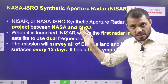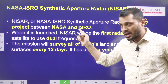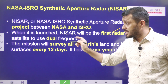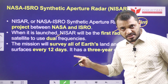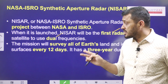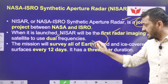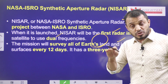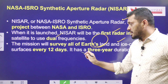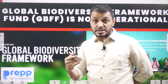NISAR is a combined satellite being developed by both NASA and ISRO. The name stands for NASA-ISRO Synthetic Aperture Radar. It is going to be the first radar imaging satellite to use dual frequencies, enabling more detailed Earth observation. Every 12 days, this satellite will survey the entire Earth's land as well as its ice cover, providing information on the effects of global warming on ice caps. It has a three-year mission duration, which can be extended.